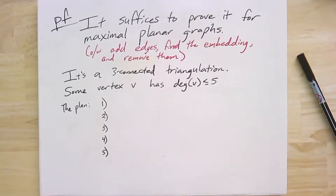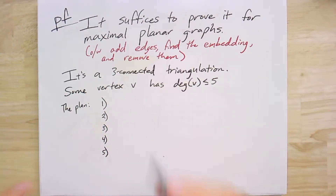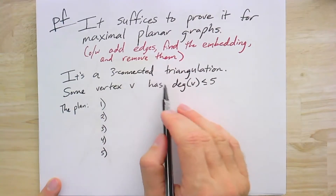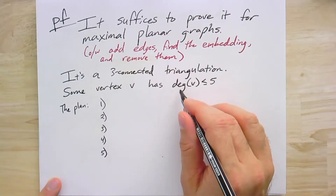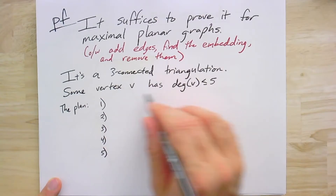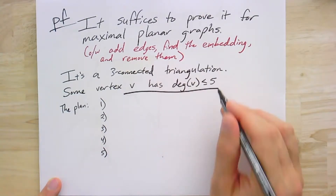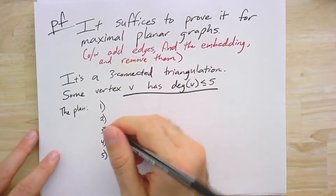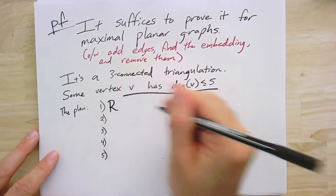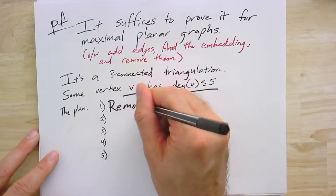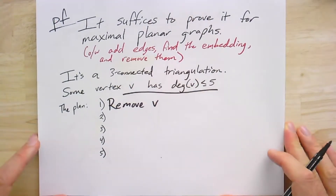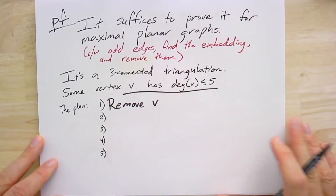We're going to use that special vertex and induction to prove this theorem. I'll give a high-level description of the steps, walk through the key insight, and then draw pictures to see how the steps work in practice. Because the graph is a three-connected triangulation and planar, there's some vertex V that has degree at most five. The first step is to remove V from the graph.